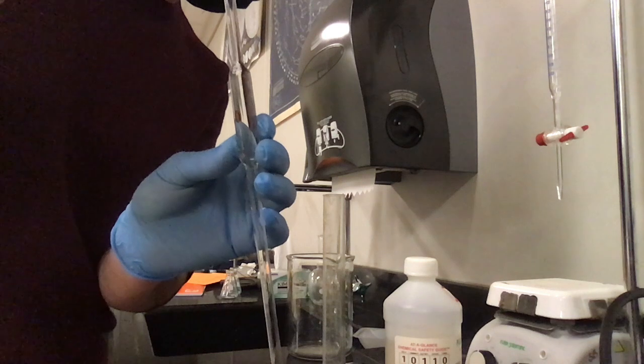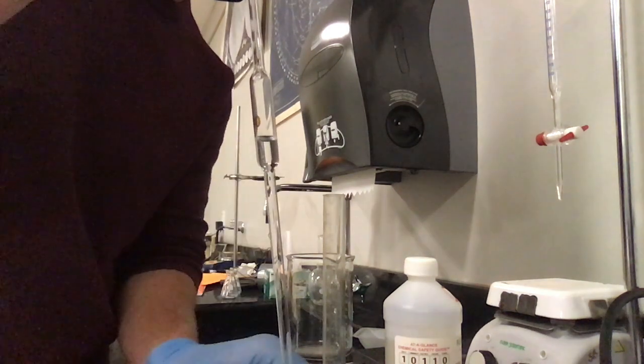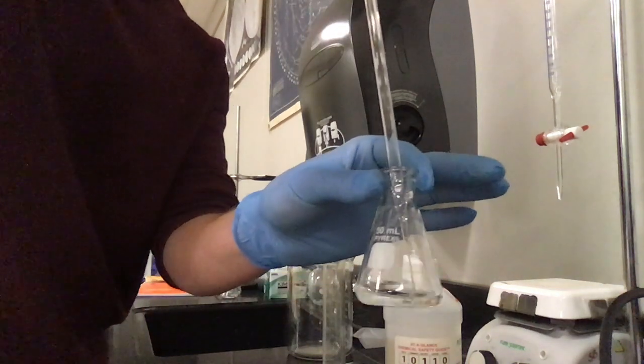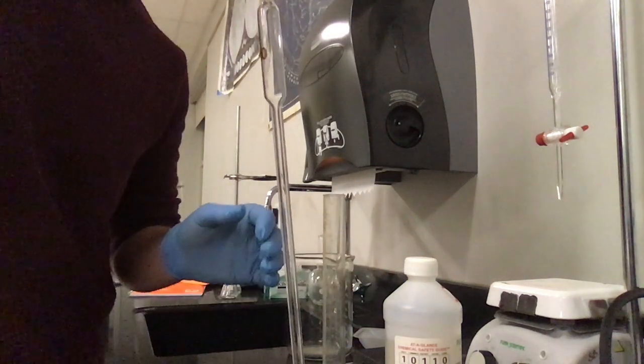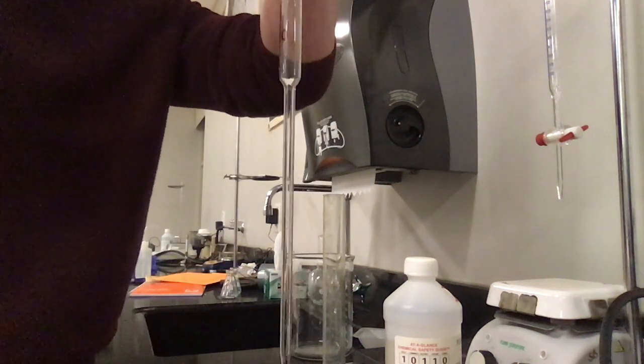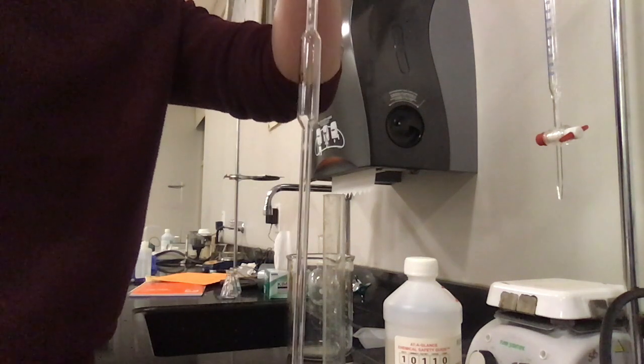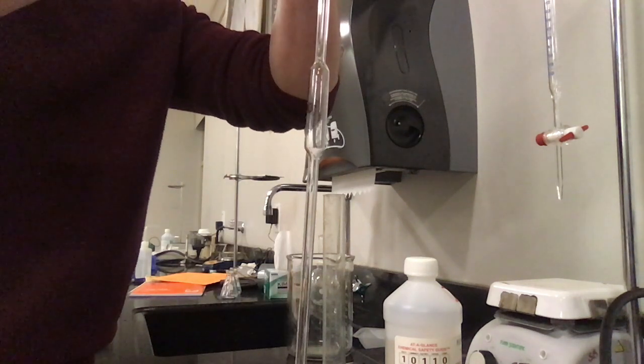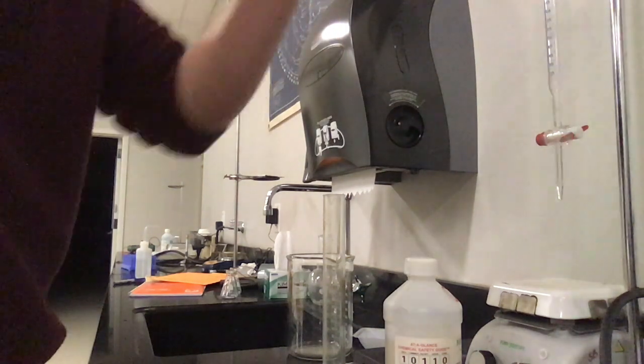I'm going to empty this into my Erlenmeyer flask. There, it's being emptied into my Erlenmeyer flask. Now I have that little bit of acid at the end. I'm going to inflate my bulb. I'm going to press the S button for sucker while putting positive pressure on that bulb. I'm just going to spit all that acid down into that Erlenmeyer flask.